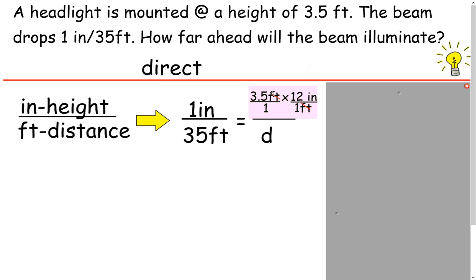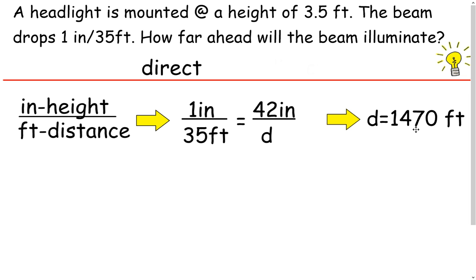So on the top, we're going to have to figure out, they gave us 3.5 feet for the height that the headlight's mounted, but we need to convert that. Remember your conversions, making your bridges. You end up with feet on the bottom and 12 inches on the top. That goes away. You end up with 42 inches here. And so if we do some cross-multiplying, we get our final answer of the distance is 1,470 feet.